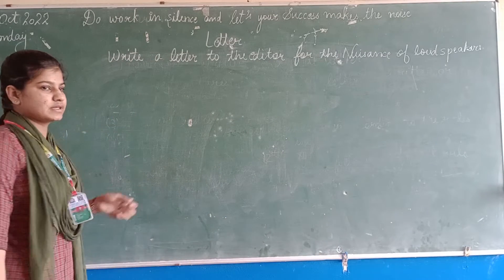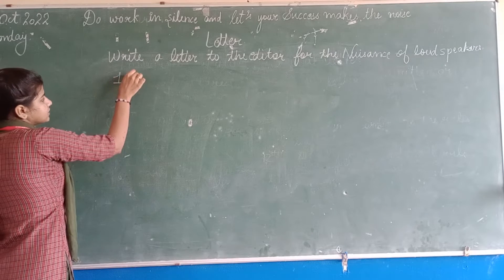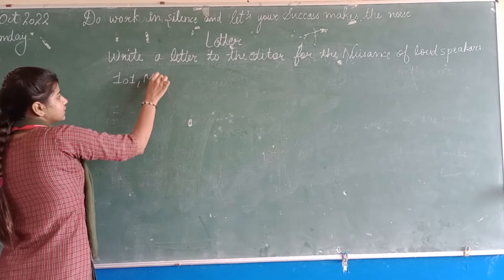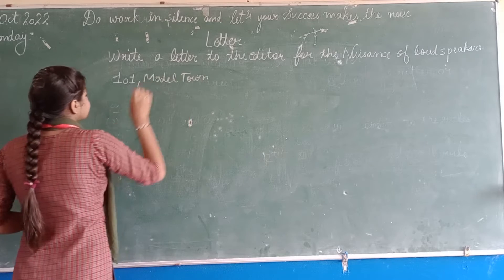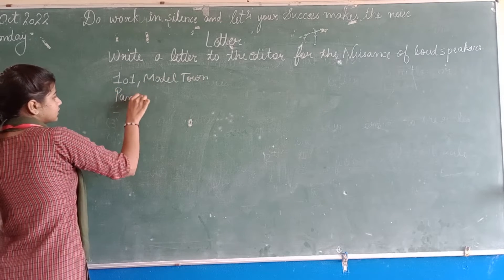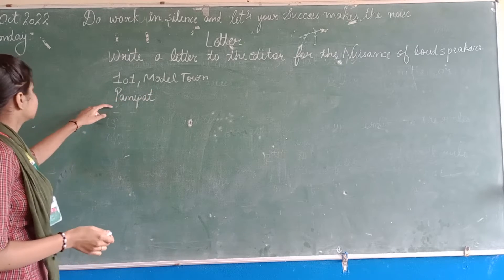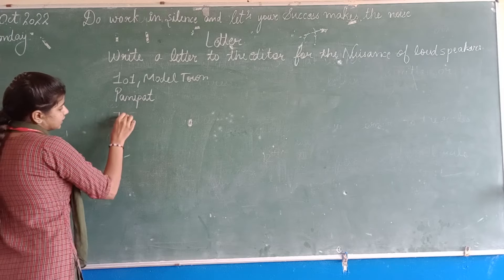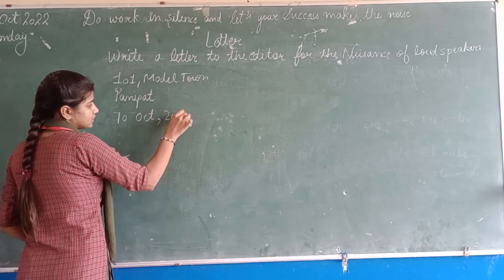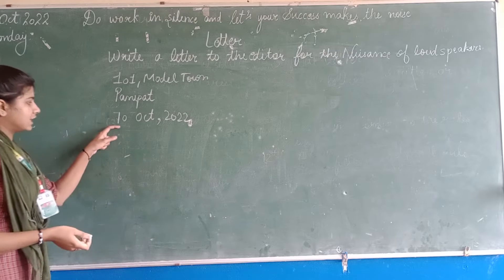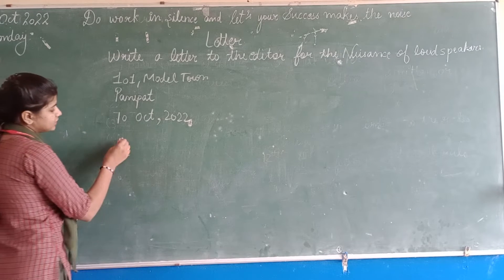First is the sender's address. Then we leave one line and write the date — in this way we have to write the letter: 10 October 2022. Then we leave one more line and write the receiver's address.